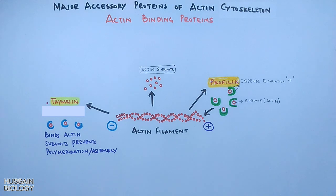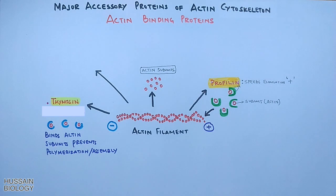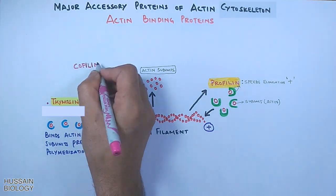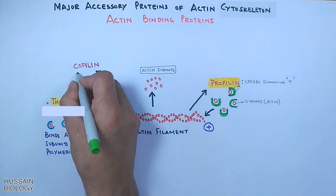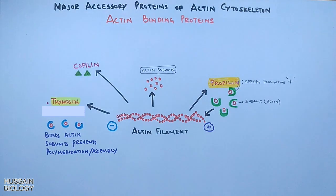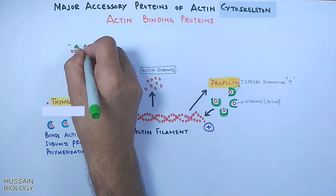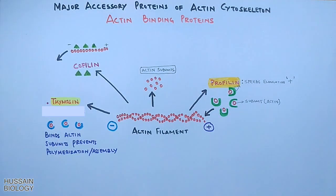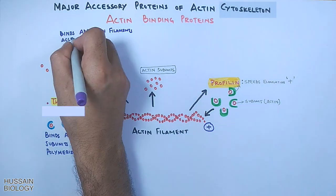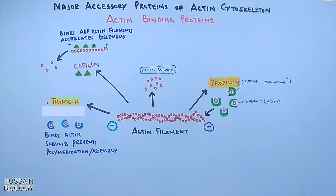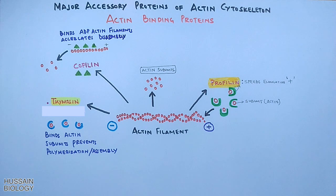The third accessory protein is cofilin. Cofilin binds to the actin-ADP subunits and promotes the disassembly of the actin filament. The cofilin family includes a few other proteins as well, like ADF (actin depolymerizing factor) and depactin.